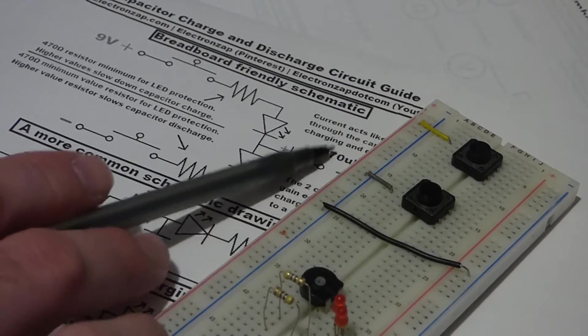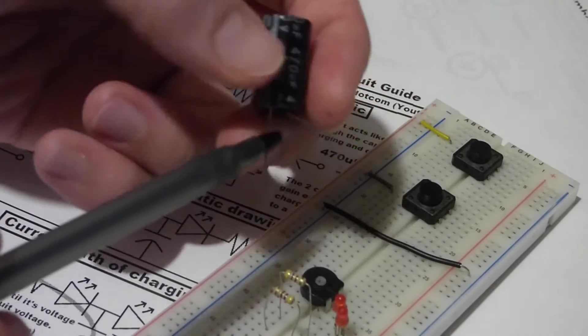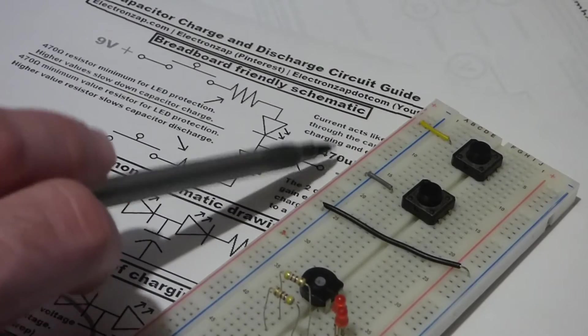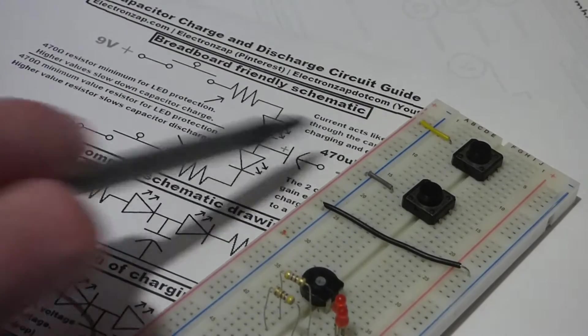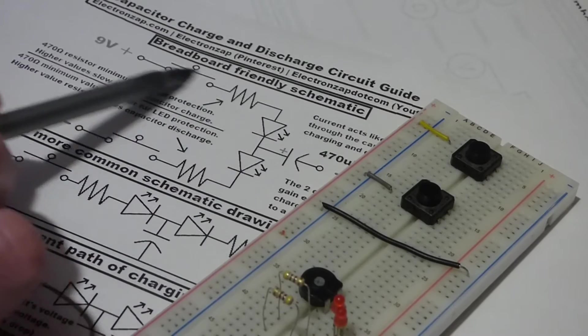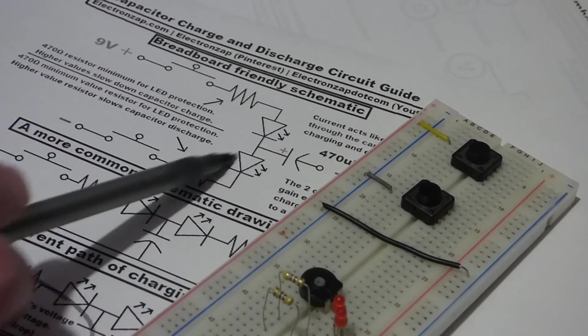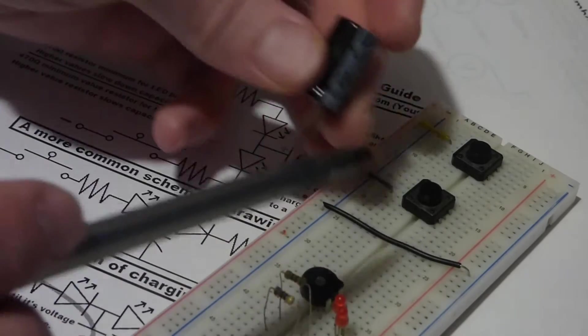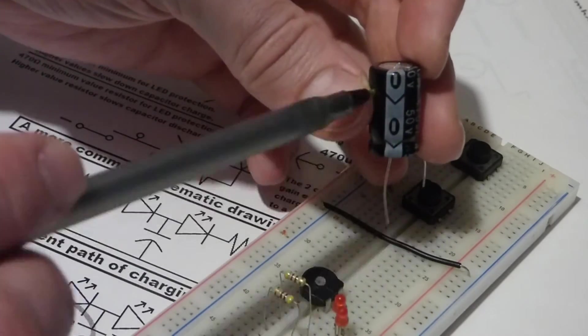So now that brings us to the capacitor. In this case I'm using a 470 microfarad capacitor, but it doesn't need to be this one, but this is a good size for this circuit. And so it goes towards the positive switch there and then towards the negative switch there, so I'm going to set it in the middle.